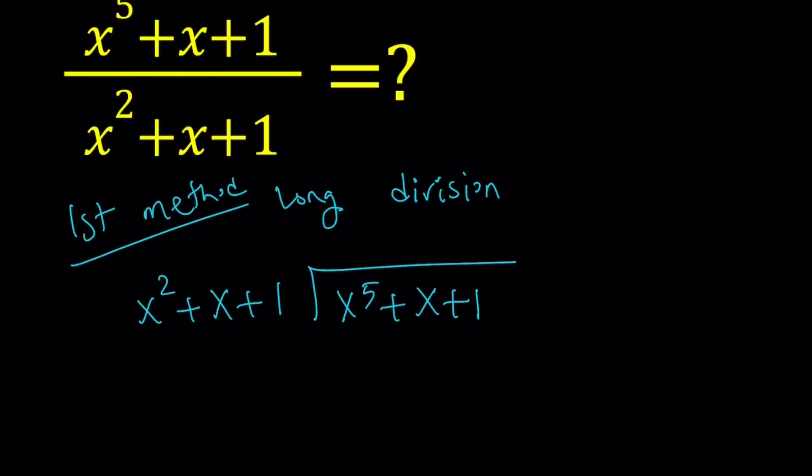Now, I'm going to divide x squared into x to the fifth. So, I have to ask, x squared goes into x to the fifth how many times? The answer is x to the power of three. Because when you multiply x to the third by x squared, you get x to the fifth. Now, I'm going to go ahead and distribute the x to the third here by multiplying. And that's going to give me x to the fifth plus x to the fourth plus x to the third.